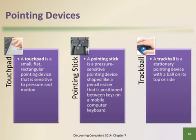Another pointing device is the trackball. Because it is stationary, it is a good alternative when desk space is limited. A trackball often works better than a mouse for people with shoulder pain because it takes less overall movement to use.